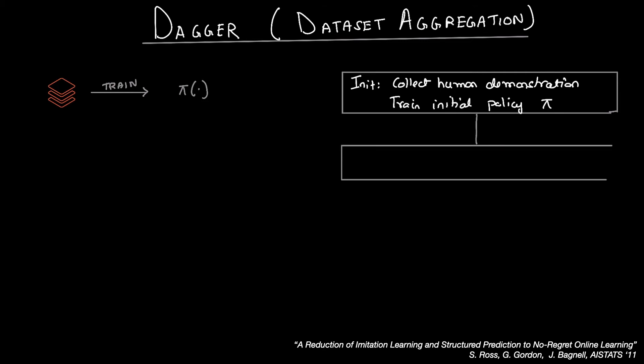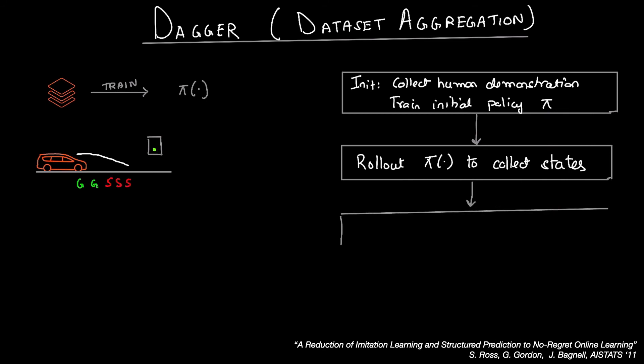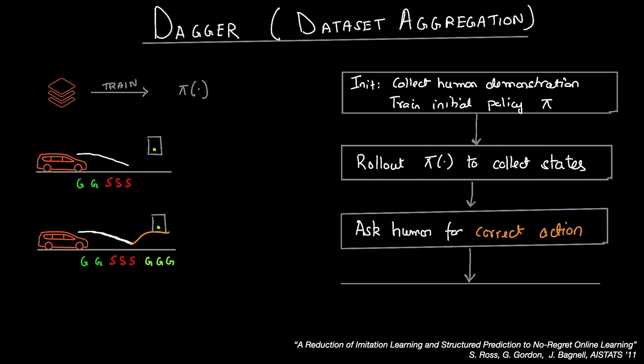Step two, you roll out or execute this policy in the real world and collect states that the robot visits. So in the traffic light example, you run the policy on the robot and you observe that it's stopping at a green light. Step three, you ask the human for the correct action on these states. So in the example, the human intervenes and goes. And so you see a data point where even though the previous action was stopped, the correct action is to go.